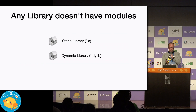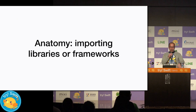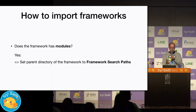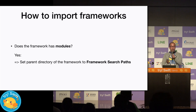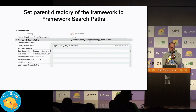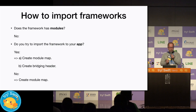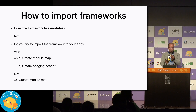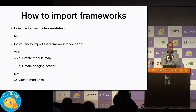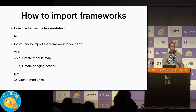Any library doesn't have modules because libraries do not have bundles. That means importing libraries is different from importing frameworks. If the framework has modules, set the parent directory of the framework to the framework search path. That is the easiest pattern of importing a framework. If the framework doesn't have modules, you have two options: whether to use a bridging header or module maps. But a bridging header can only be used in apps. If you try to import the framework into your framework, you should use the module map.